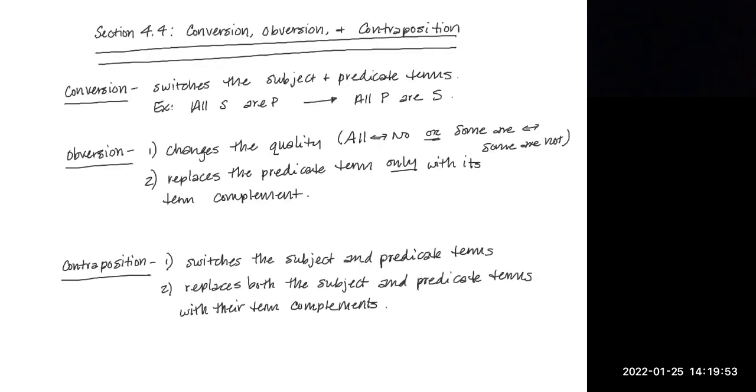So if I were to apply both of those movements in obversion to an A statement, it would become, again ignore the arrow, just showing you where I'm going with this, I would replace the all with no. I would leave the subject term alone. I would leave the copula alone as well, but my P would be replaced with non P. So if I worked obversion on the A statement, it would become no S are non P.